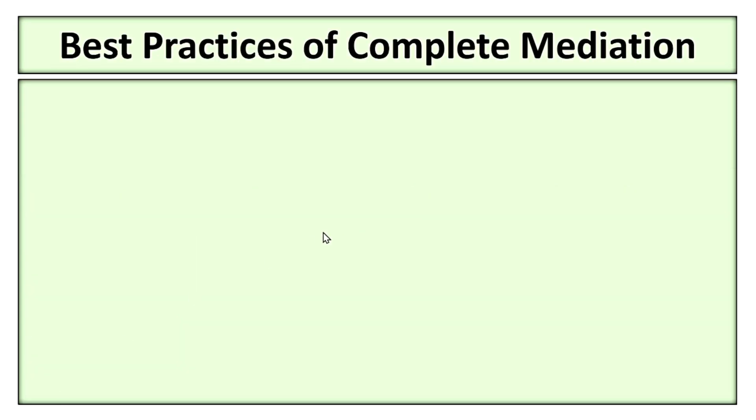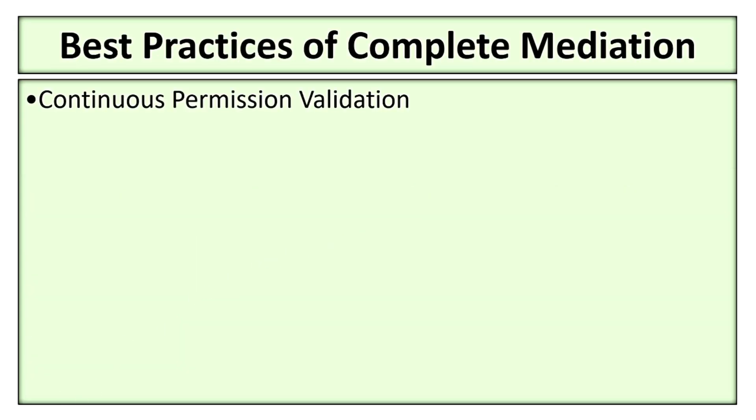Now let's see some best practices for complete mediation. First, ensure every access is validated against the latest access control settings. For example, in cloud platforms, access permissions are checked on every API request even if a user has prior access to resources. The system revalidates permissions to ensure they are still valid at the time of each access.